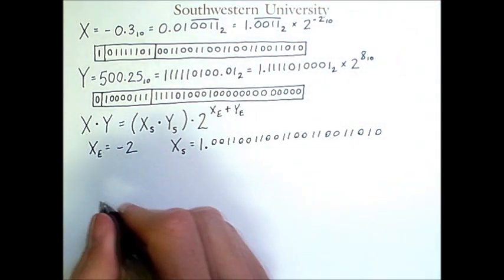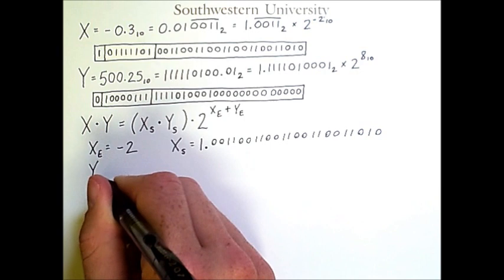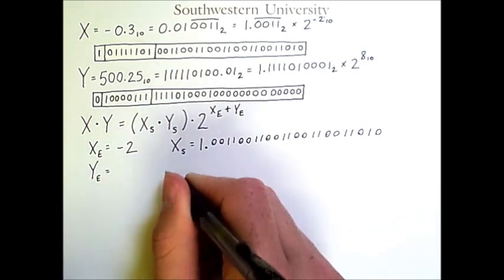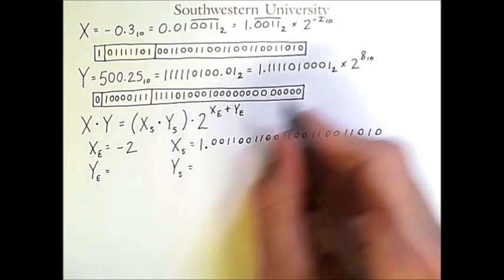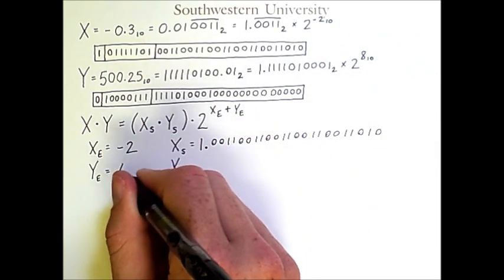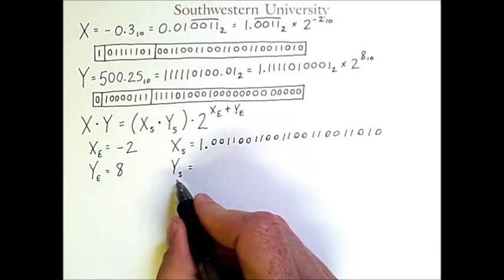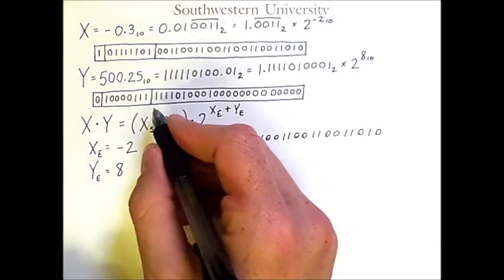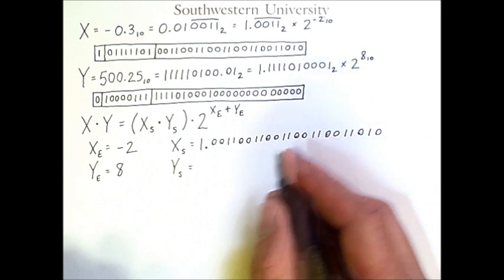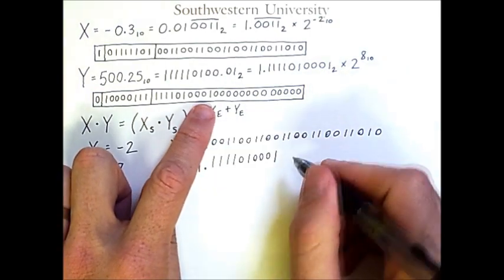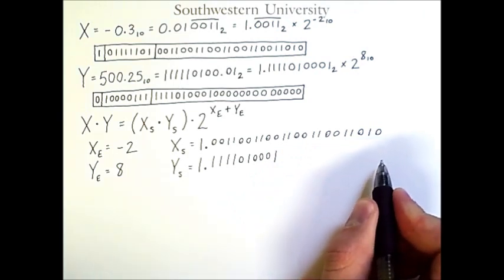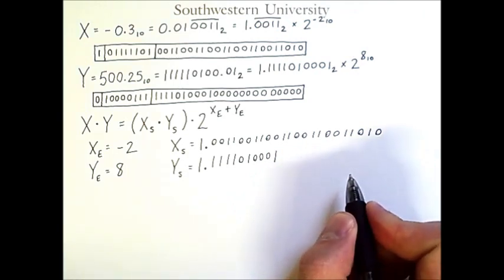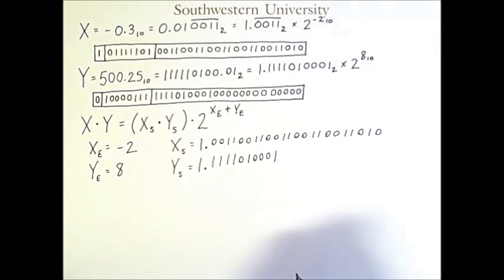And now I will compute the exponent and significand for y. So y's exponent is simply 8. And y's significand is a one point followed by this sequence. Now I'm going to leave out the trailing zeros because we don't need them. They're simply padding the right-hand side of this.